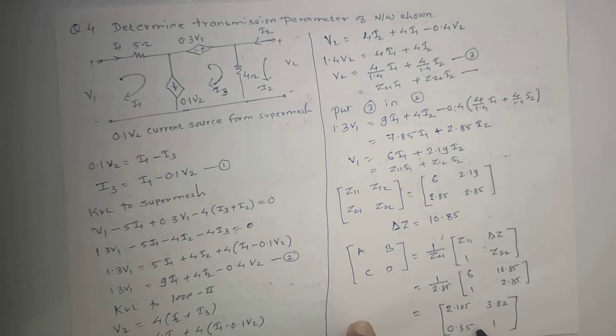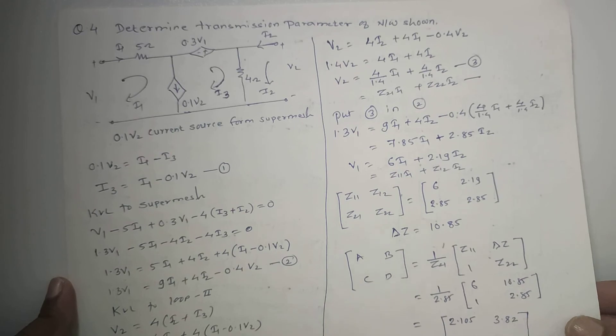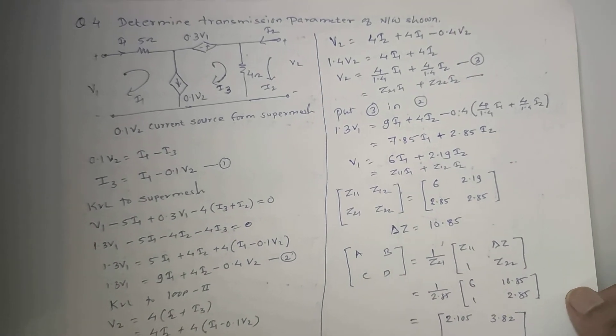So if you have to find out any parameter, whether it is transmission parameter, H parameter, or Y parameter, first of all you have to find out the Z parameter and then you have to obtain the other parameters.